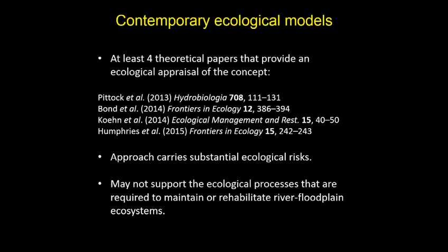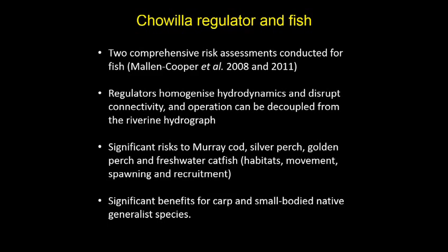There are a few papers published over the last few years reviewing the approach. These authors thought it may maintain the health of over-story vegetation, but it carries substantial risks and might not ultimately restore the processes required for these ecosystems. A fish risk assessment said similarly that regulators simplify habitats, cause fragmentation, and can be decoupled from the riverine hydrograph — which may cause impacts for native fish but benefit carp.